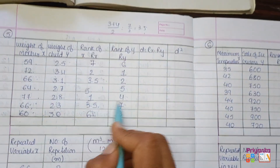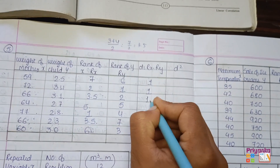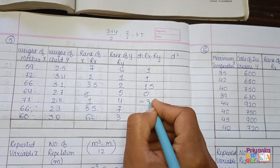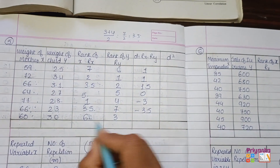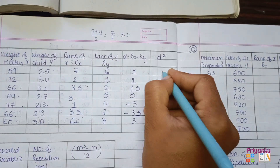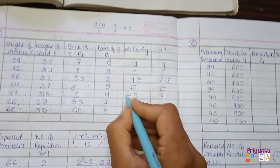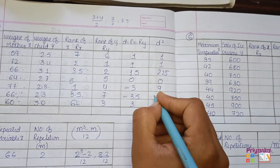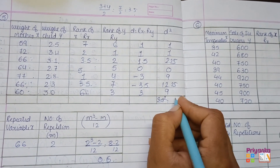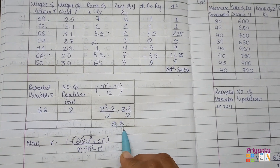Now calculate D as the difference of the two rank columns: 7−6=1, 2−1=1, 3.5−2=1.5, continuing to get 0, and one value where the y rank exceeds x rank giving a negative difference, and 6−3=3. Take the square of each D value: 1, 1, 2.25, 0, then (−3.5)²=12.25, and 3²=9. The total sigma D squared is 34.50.